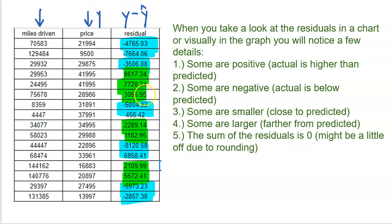Some residuals are kind of smaller. For example, this residual right here is pretty small. This residual is off by $2,000 — that's not too bad. This one's off by $1,100 — not too bad. And some residuals end up being bigger: this one is off by $7,000, this one was off by $8,000. But the point is that this is good — you should see a nice mix of residuals. When your residuals are mixed up, it only proves that your line is truly going through your data.